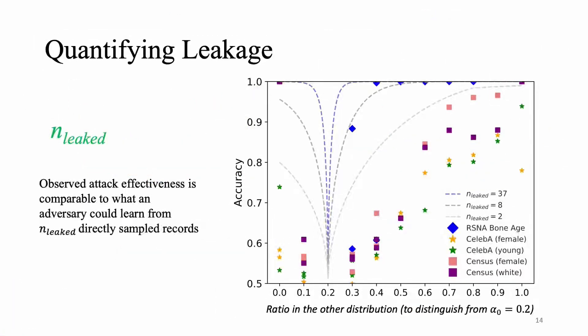And that is what we propose the n leak term for, and this is what we saw at the very beginning of the presentation. So what this essentially means is if you look at a particular attack and the observed attack effectiveness, it's comparable to what the adversary could learn if it could directly sample n leaked samples from the underlying distributions. So let's say an n leak value of two means that the adversary had the capability to sample two records from the underlying distribution, then the best performance that it could get is what you are seeing with the current attack. So naturally a higher value of n leak for the same setting means that the attack in that particular setting is leaking much more information.